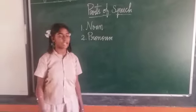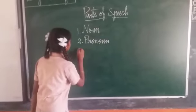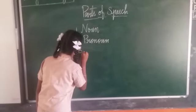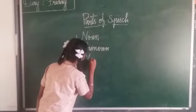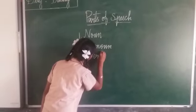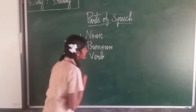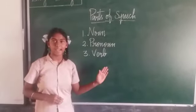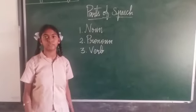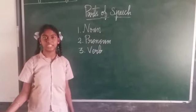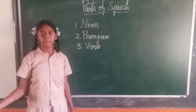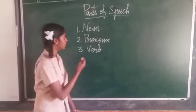The third one is Verb. Verb means an action word. For example, drink, eat, play. These are verbs.